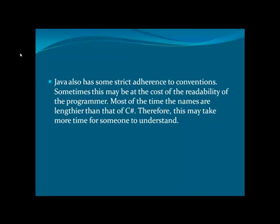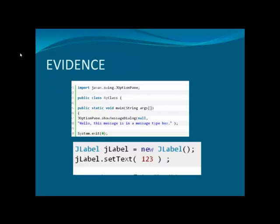Most of the time, the names in Java are lengthier than those of C-Sharp, therefore this may take more time for someone to understand. Due to this factor, programmers start preferring C-Sharp way more than Java. In this particular evidence slot, the above-selected factor is far more clearly portrayed.